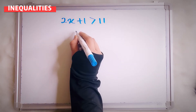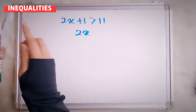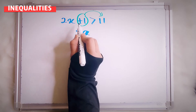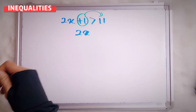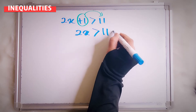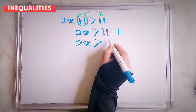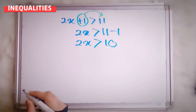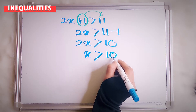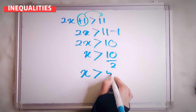So now, 2x — I want to move this number plus 1 to this side. This is a positive, so once you move to a different side, the sign still maintains the same. So, 11 minus 1. Here, 2x greater than 10. So now, your x will be greater than 10 over 2, and your x now is 5.